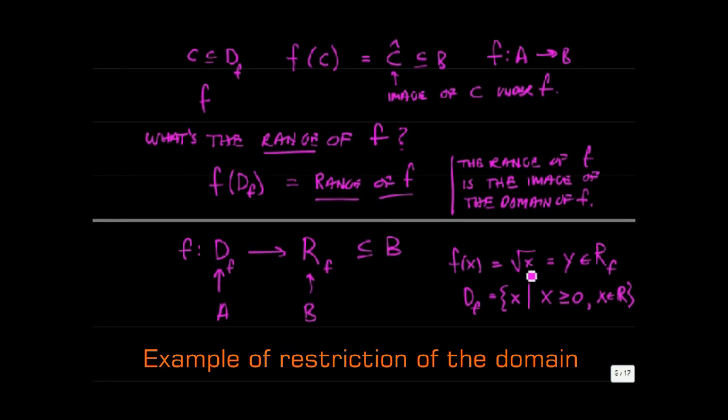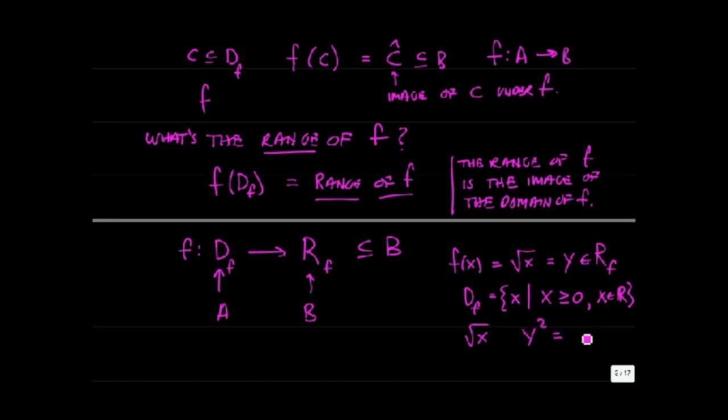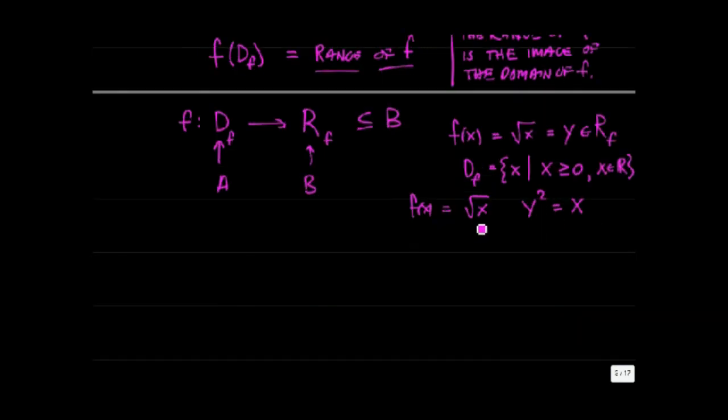So the domain of the square root function is going to be positive real numbers or zero. Now, we also require f map each element of the domain to a single element in the range. The square root of x is the solution to the equation y squared equals x. If f of x equals the square root of x, the square root is defined as the solution to the equation y squared equals x.